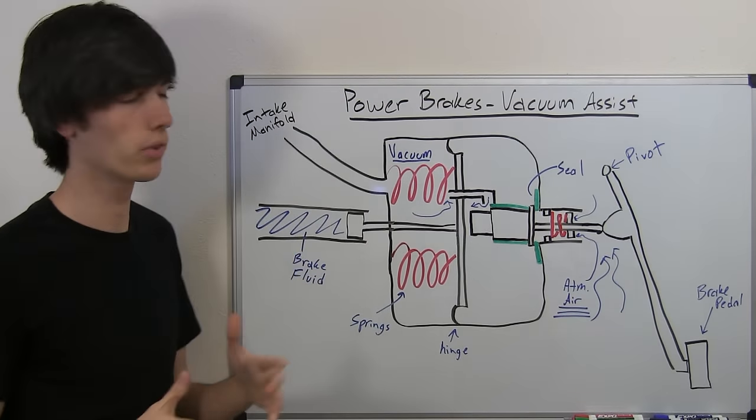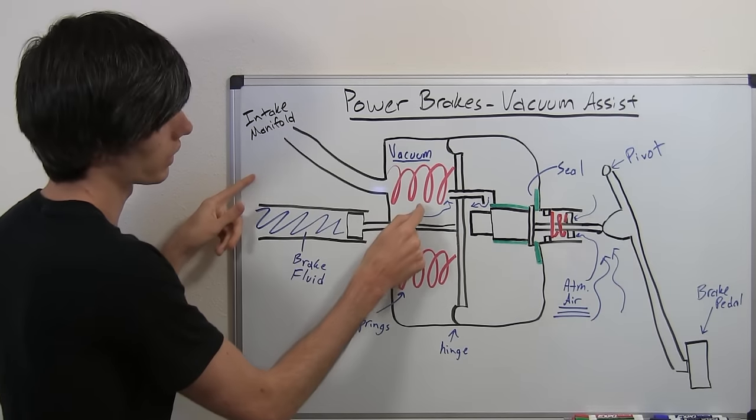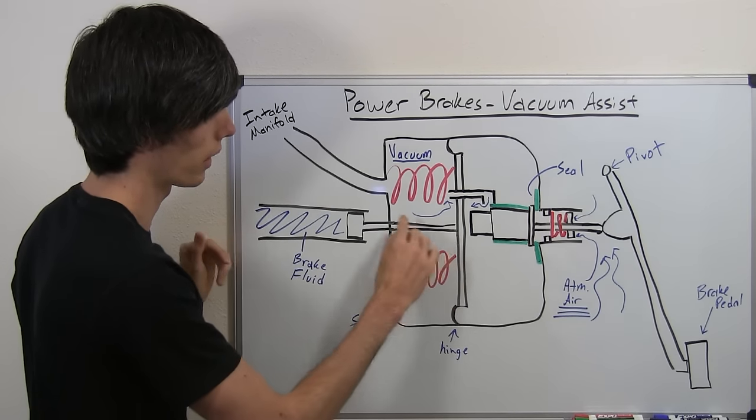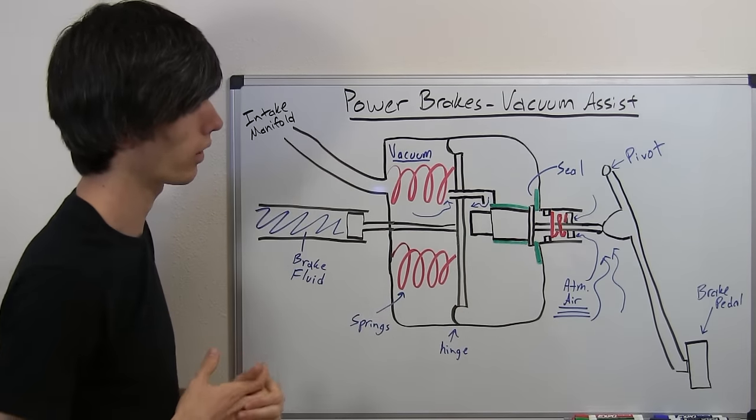So your intake manifold is going to have a vacuum in it because your engine cylinders are pulling in air. Well, they're also going to be pulling in air from this vacuum chamber, and when you're not on the brakes, that vacuum chamber is connected to here, so it's going to have a vacuum in this whole area.